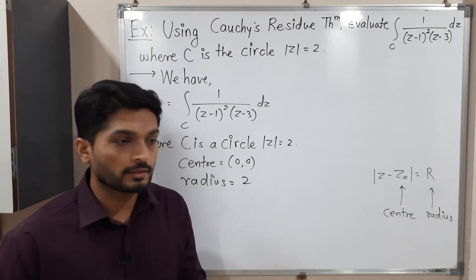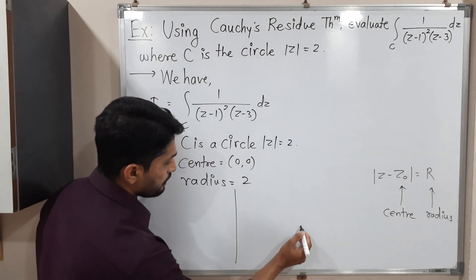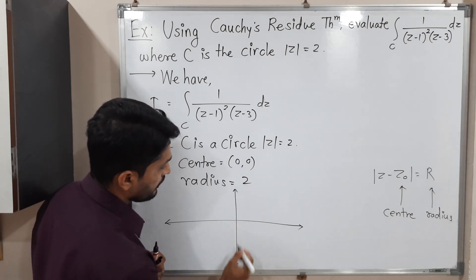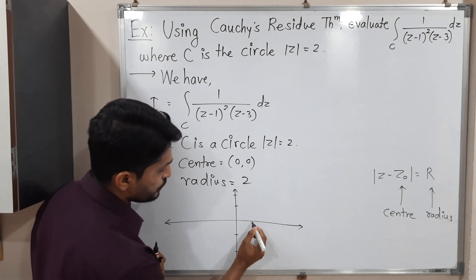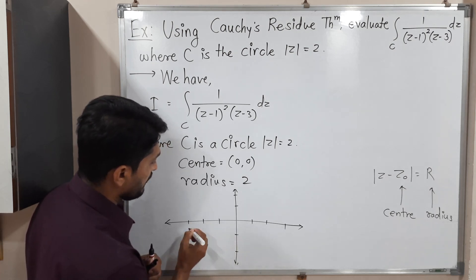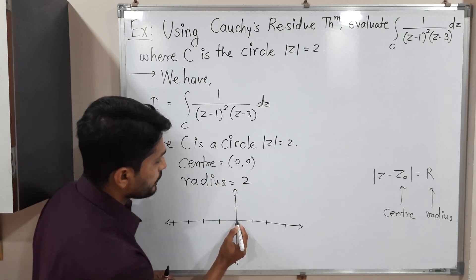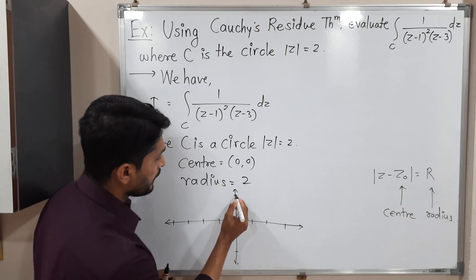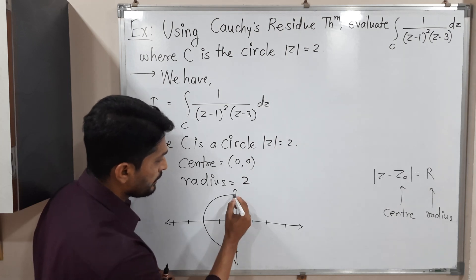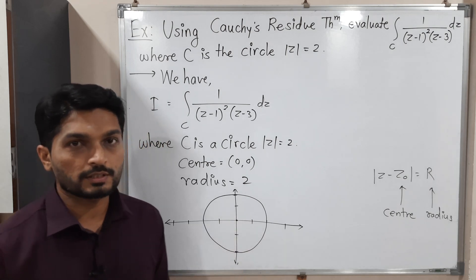The given circle has center (0, 0) and radius 2. Let us draw this circle. Here is the imaginary axis and real axis, with values 1, 2, minus 1, minus 2 on the real axis and 1, 2, 3, minus 1, minus 2, minus 3 on the imaginary axis. So our circle with center (0,0) and radius 2 looks like this — this is a rough sketch of the circle.